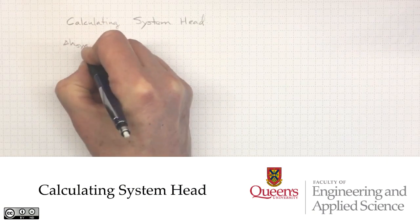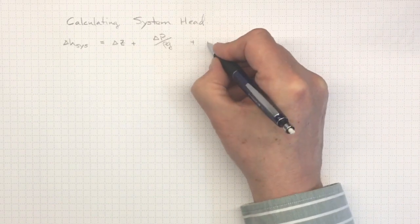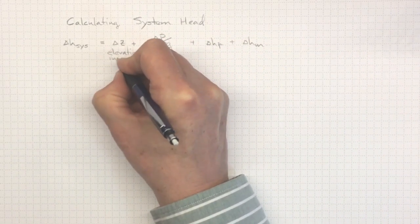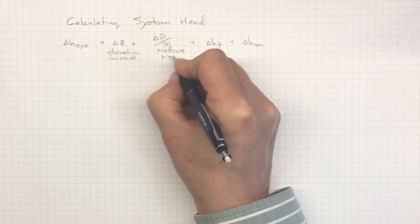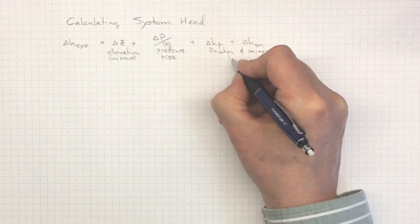We talked about the idea that we'll have a system head, the head rise required across the pump to overcome a change in elevation, a change in pressure, plus whatever dissipative friction losses and minor losses we have in the piping system.